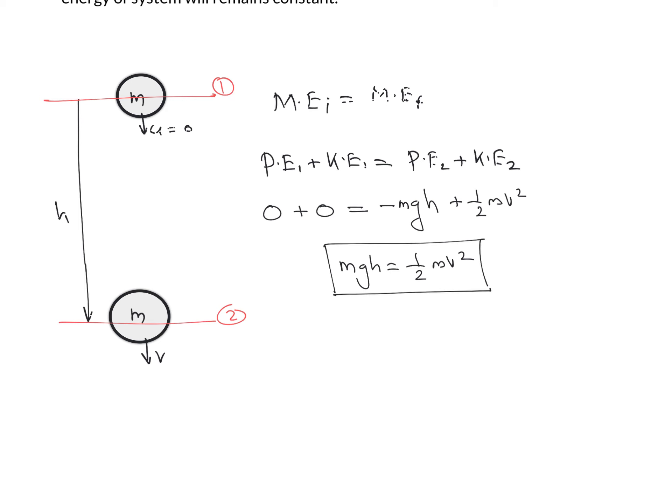For solving problems, you can use any of these equations: (1) W_all = ΔKE, (2) W_conservative + W_non-conservative = ΔKE, (3) W_non-conservative = ΔKE + ΔPE, or (4) if non-conservative forces are not acting on the system, total mechanical energy initial equals total mechanical energy final.